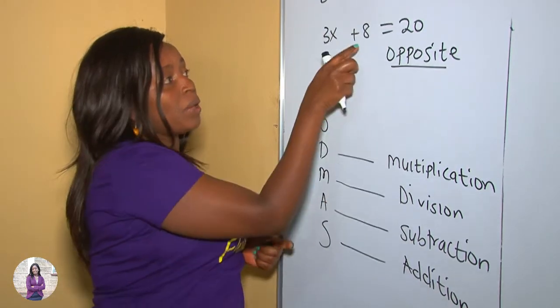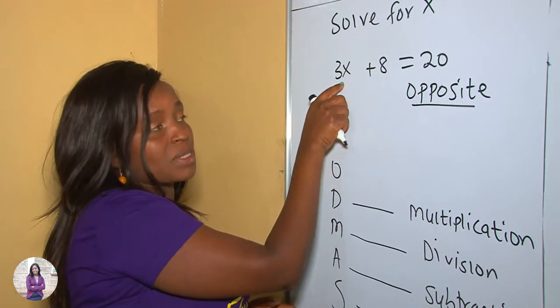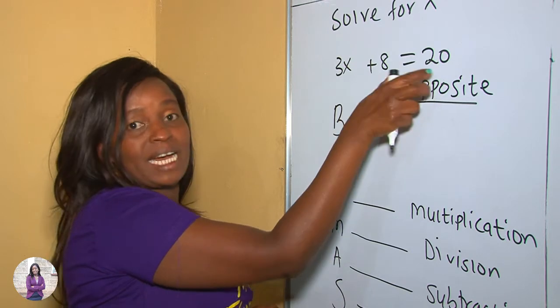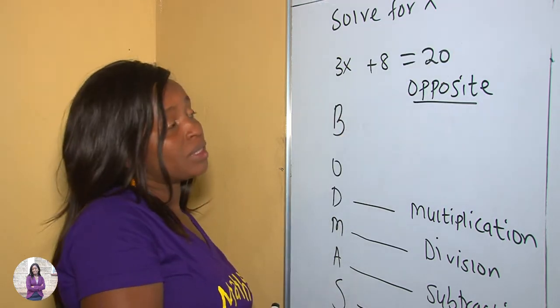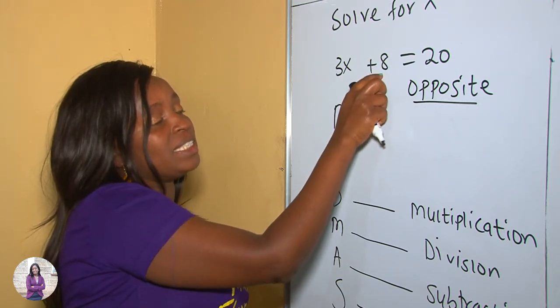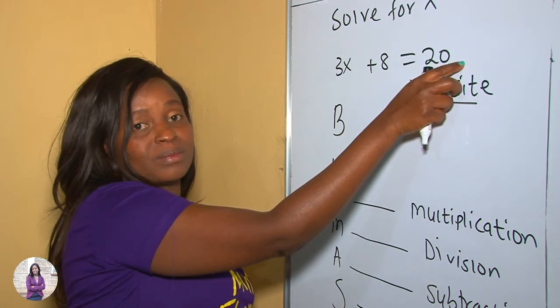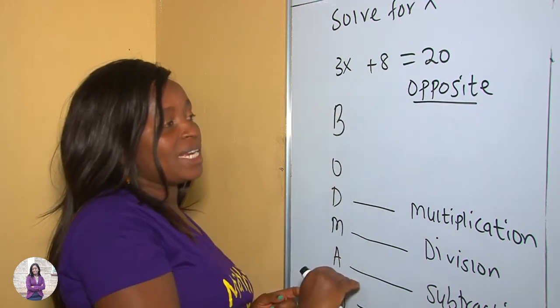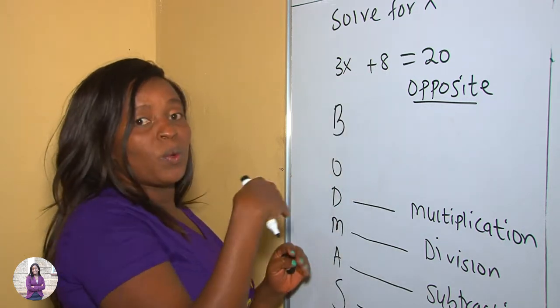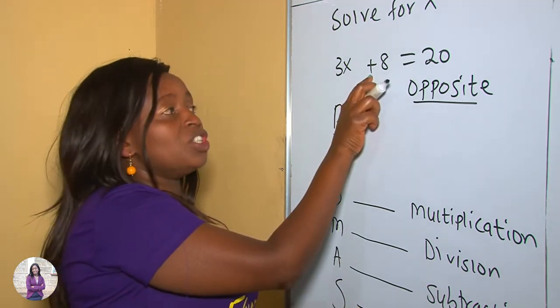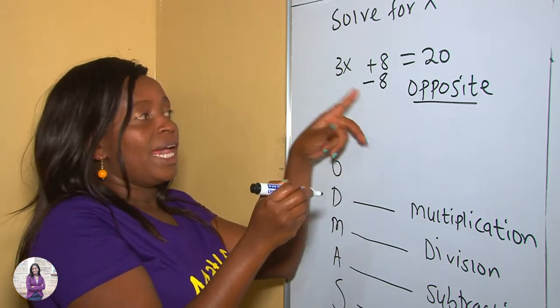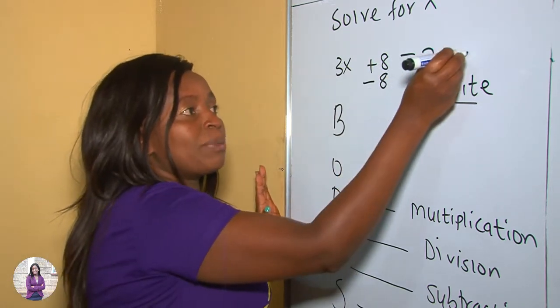What do I mean? We are looking for x, and as you can see, this number and this number are the like terms because they don't have letters attached to them. Therefore we need to work out such a way that these eight will come to the other side. Now we are saying when it comes to equations, the sign we get is opposite. The opposite of addition is subtraction. So we subtract 8, and whatever you do on the left you also do it on the right, so also subtract 8.